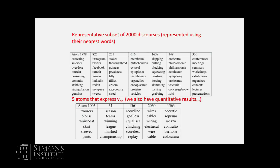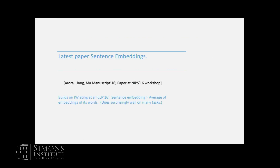This was a new discovery — people had always wondered how polysemy affects word embeddings, and this was the clean answer. For sentence embeddings: these are usually computed using recurrent neural nets. We give a very simple alternative inspired by Wieting et al., where the sentence embedding was just the average of word embeddings in the sentence.